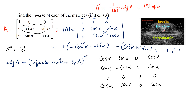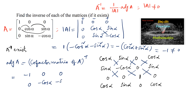Now let us find the determinants of the cofactors. cosα × (-cosα) - sinα × sinα gives -(cos²α + sin²α) = -1. The terms sinα × 0 = 0, cosα × 0 = 0, and 0 × sinα = 0, 0 × cosα = 0. Next, sinα × 0 - 0 × cosα = 0, cosα × 1 - cosα = -cosα, and 0 × 0 - sinα = -sinα. Also, 0 × sinα - 0 × cosα = 0, 0 × 0 - sinα × 1 = -sinα, and 1 × cosα - 0 × 0 = cosα.